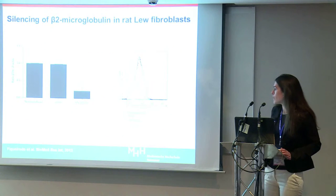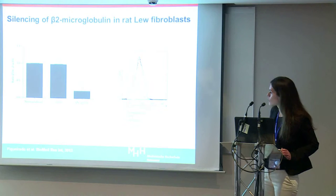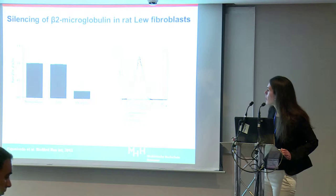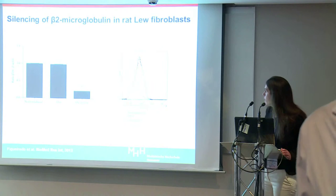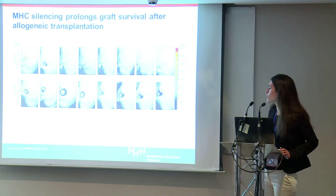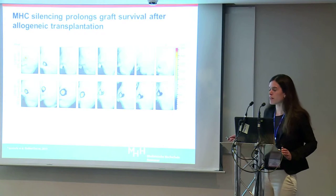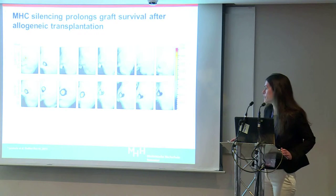As one example, we used an allogeneic transplantation rat model and silenced MHC class 1 expression — called RT1A in rats — in fibroblasts. We observed a downregulation of beta-2-microglobulin at the mRNA level, causing a reduction in RT1A expression at the protein level. When transplanted in a fully MHC-mismatched manner, non-silenced fibroblasts were completely rejected by week 3, while MHC-silenced fibroblasts were able to engraft and were detectable during the entire monitoring period.